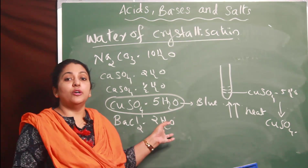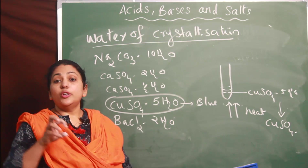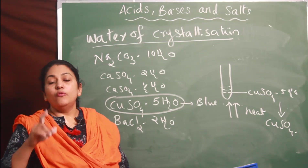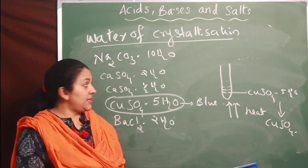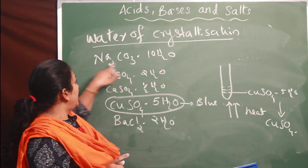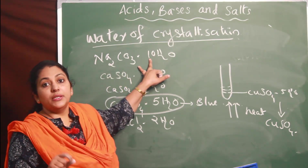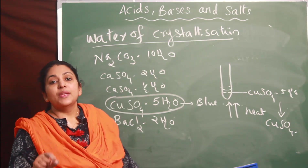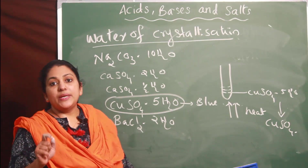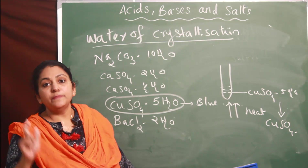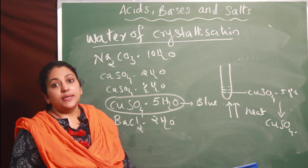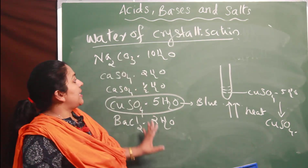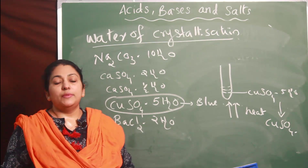Let us define water of crystallization: it is a fixed number of water molecules present in one formula unit of a salt. The number must be fixed - for washing soda it is always 10, that number will not change. So water of crystallization is a fixed number of water molecules present in one formula unit of a compound. With that, the topic of water of crystallization and the entire second chapter is complete.